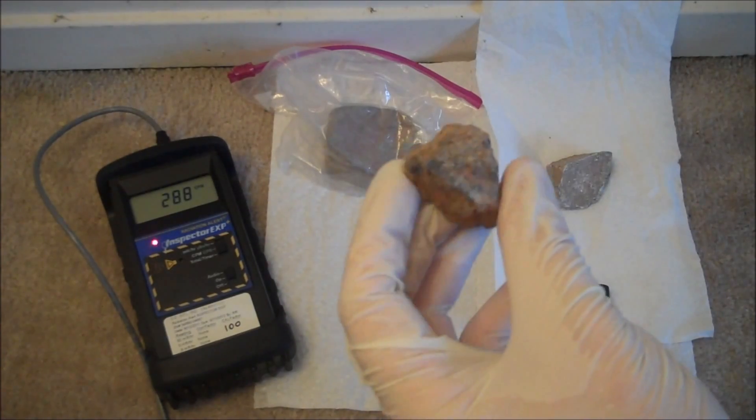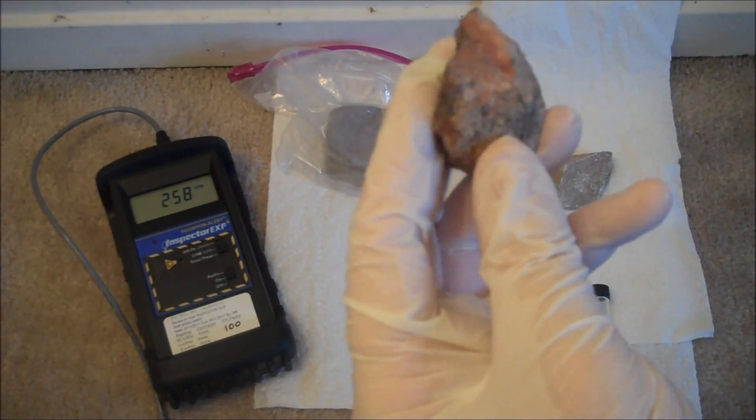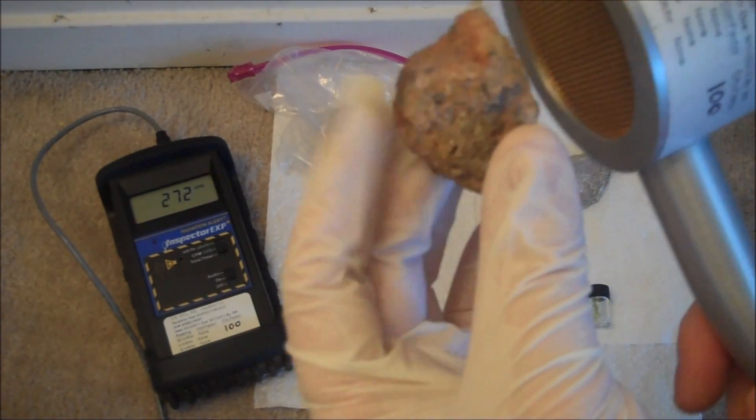Some rocks, like this dinosaur bone, can contain small amounts of uranium inside of them. This is detectable with a simple Geiger counter.